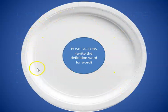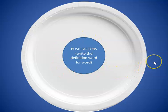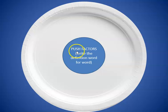Here we have a plain paper plate. What you're going to do is draw a circle as best you can — or you can cut out a circle from a piece of paper, or open up a Word document and create a shape or type what you want in there. What you're going to put in that circle is 'push factors,' and you're going to write the definition word for word.